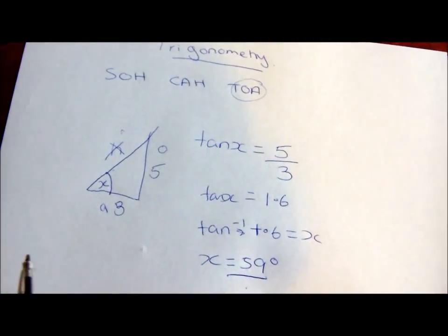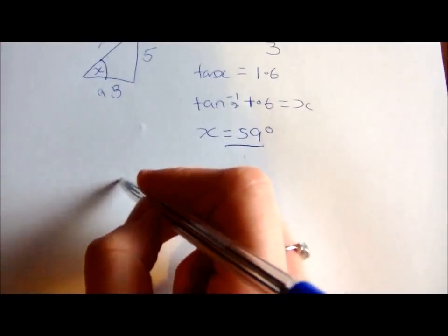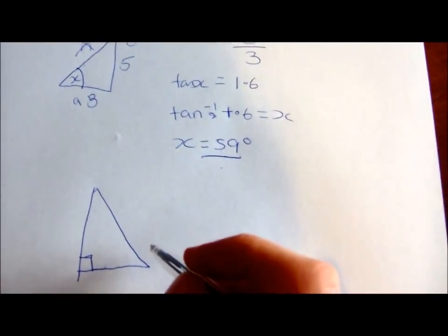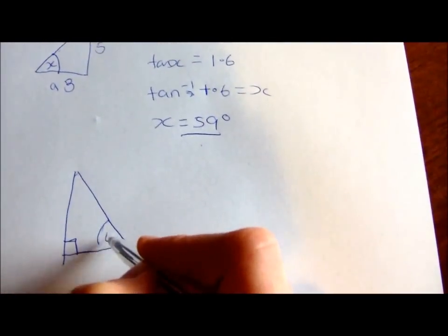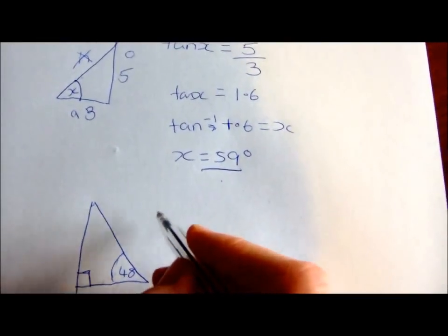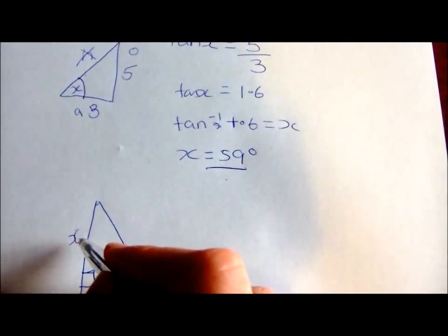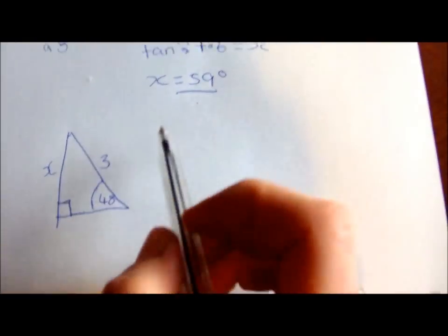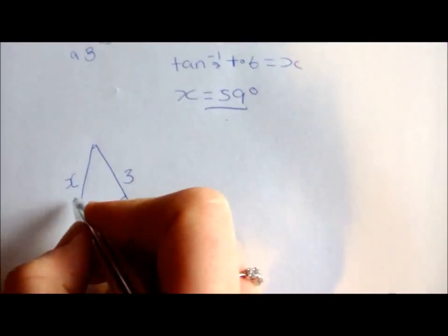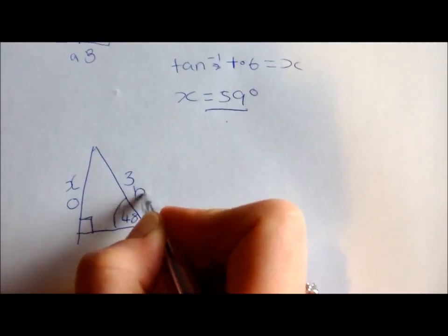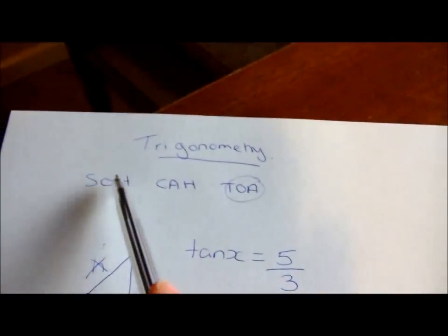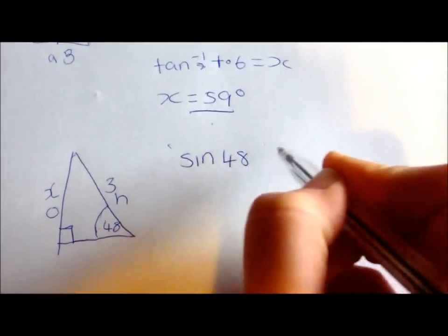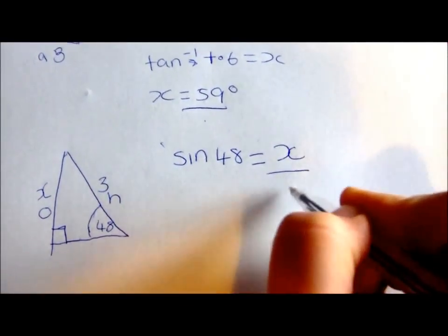So another example — got another triangle down here. That's a right angle triangle, and we have this angle here: 48 degrees. We don't know this side, but we know this one. In this occasion, we're working out this side, which is the opposite — label that O — and then this is the hypotenuse, which is H. So we are looking at opposite and hypotenuse, which means we're using sin. Sin 48 equals opposite, which is x, over hypotenuse, which is 3.